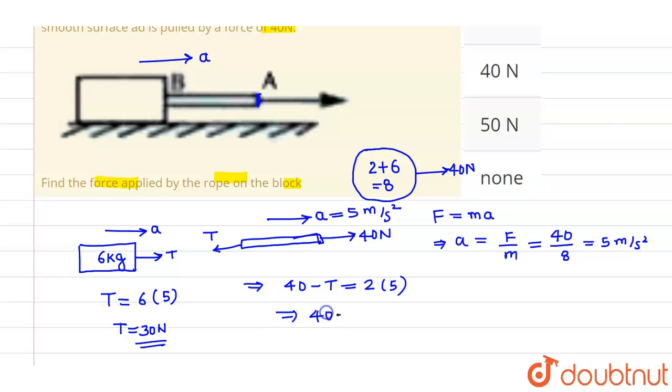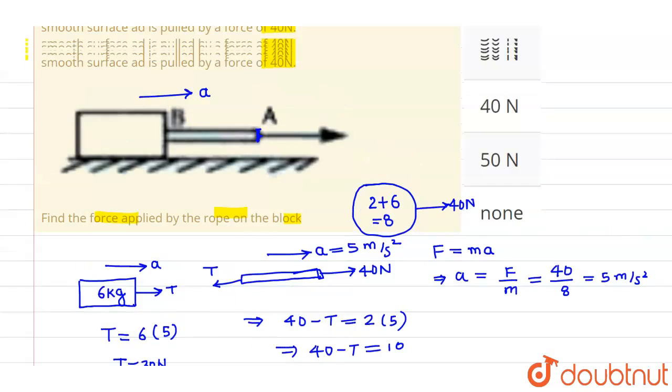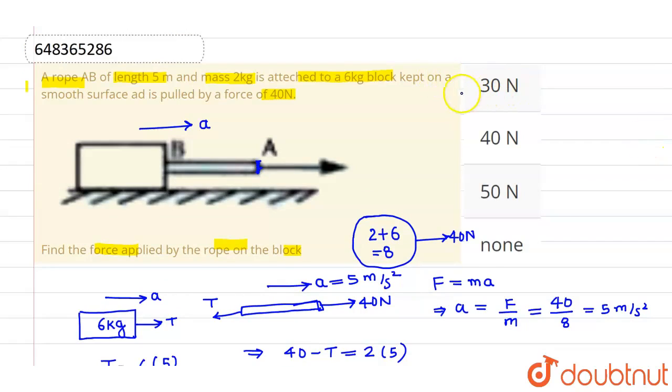From here, 40 minus T equals 10. So T equals 30 newtons. This is the value of force applied by rope on the block that we needed to find. Option 1 is correct and the rest are incorrect.